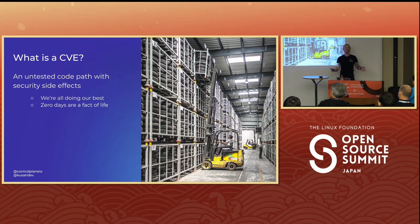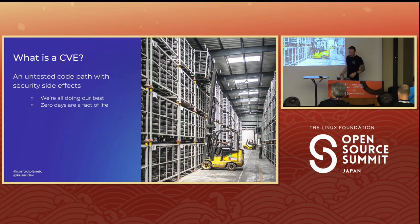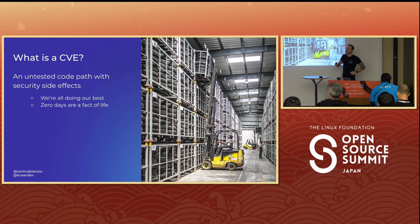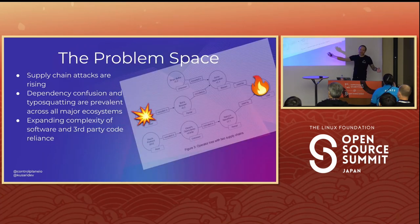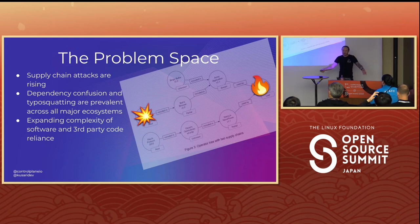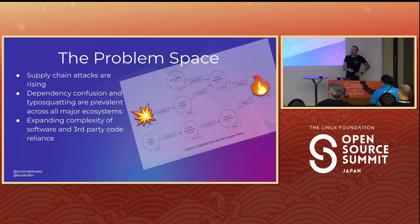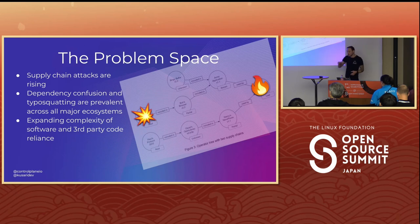Let's start with a definition: what is a CVE? It's something we didn't expect that does something bad — an untested code path with a security side effect, which is then known as a vulnerability. The problem space we're looking at is that supply chain attacks are on the rise, introducing vulnerabilities. We have recent attacks from nation-states, and we see dependency confusion and typosquatting on all major package repositories.